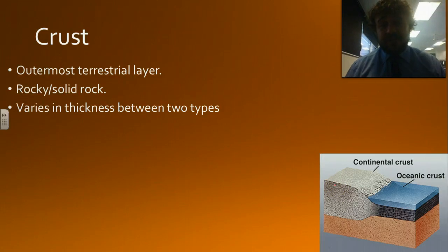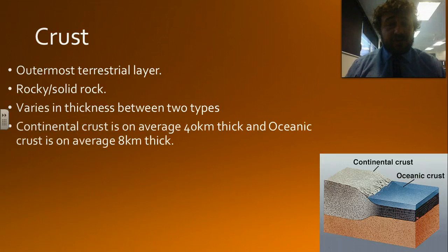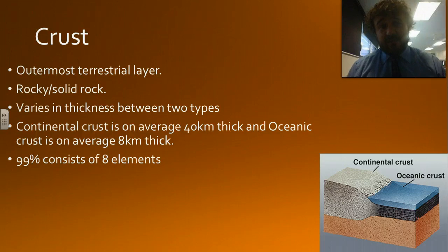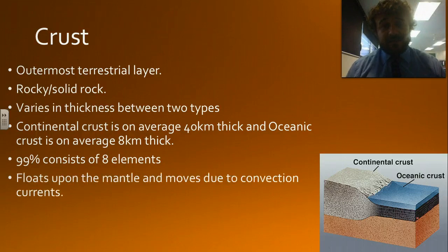Basically there's two types and they vary in thickness. You've got oceanic crust which is down here, and that's the thinnest and most dense. It's about 8 kilometers thick on average. Then you've got the continental crust which is about 40 kilometers thick on average and less dense. 99% of it is just 8 elements. It floats on the mantle and moves around due to convection currents which we showed with the experiment in class.